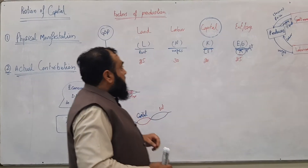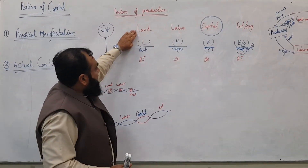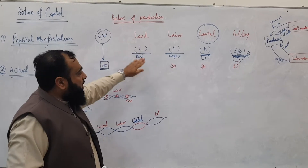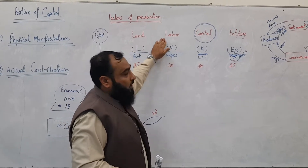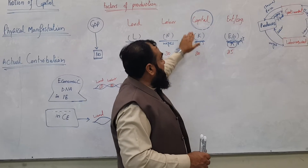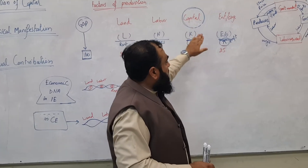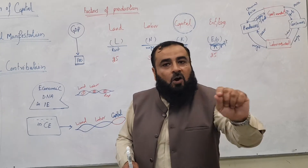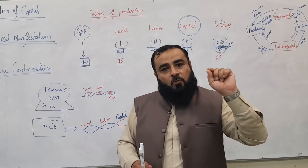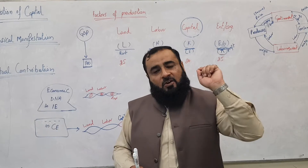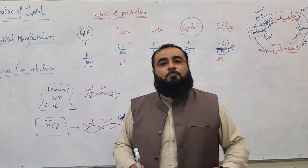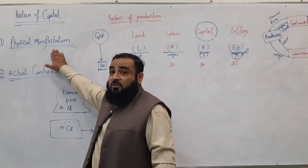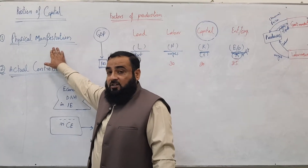We give rent as a reward for land, we give wages as a reward for labor, we give interest as a reward for capital, and we give profit as a reward for the entrepreneur. When we talk about reward, we give reward to each factor of production — not just looking at the physical manifestation of each factor of production.